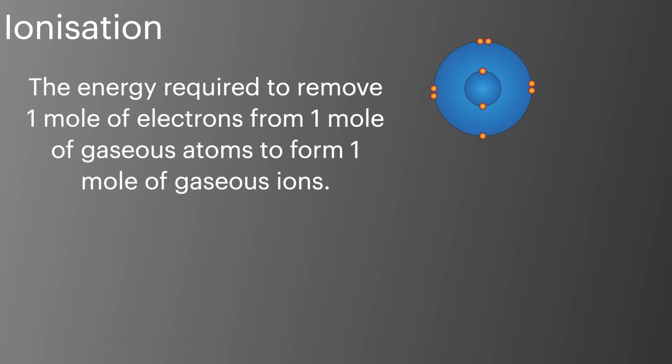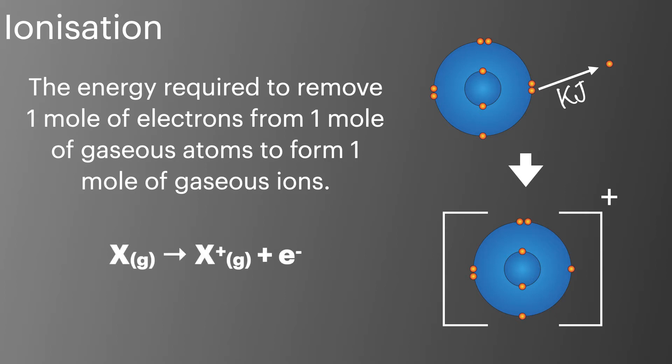We define ionisation energy as the energy required to remove one mole of electrons from one mole of gaseous atoms to form one mole of gaseous ions. We can represent it with this equation where I've used x to represent any element.